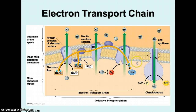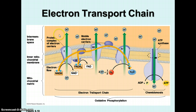In the electron transport chain, this occurs along the inner membrane of the mitochondrion — the membrane that's folded to make lots more surface area for all these proteins to be located. There are three proton pumps, a total of five proteins that the electrons are passed through, plus the ATP synthase molecule. The intermembrane space is located in between the inner membrane and the outer membrane. The inner mitochondrial membrane is a phospholipid bilayer with embedded proteins — the electron carriers. The mitochondrial matrix is where the Krebs cycle occurs.